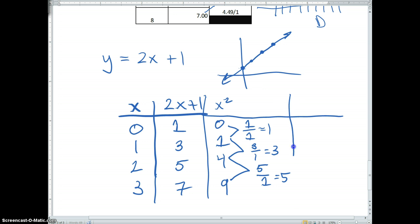Now let's suppose I add 2x plus 1, and I add x squared to it. That means I'm going to take basically the value here plus the value here. So, 1 plus 0 is 1. 3 plus 1 is 4. 5 plus 4 is 9. 7 plus 9 is 16.